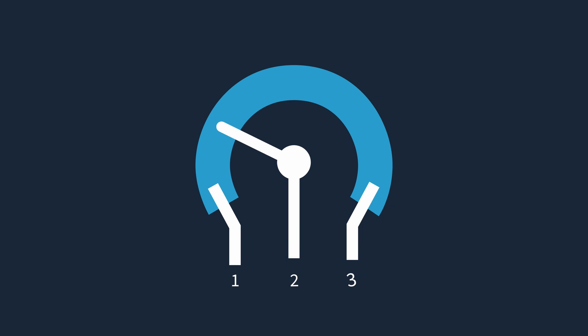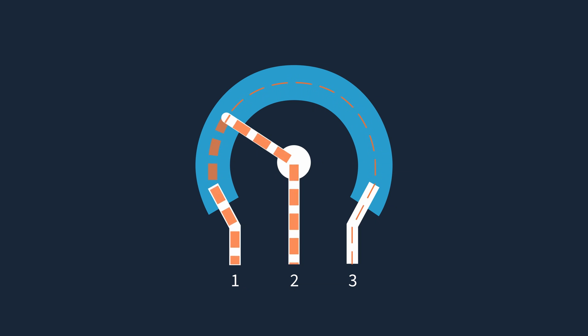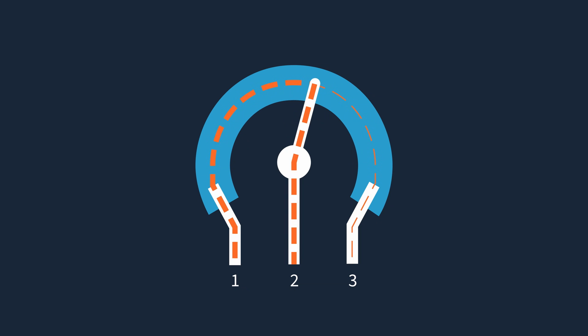Most potentiometers are three-terminal devices, which means the resistance between the two ends of the potentiometer remains the same, but the resistance between the middle terminal — called the wiper or output — and the other two terminals will change as the wiper is moved. With a properly set-up circuit, this also determines the voltage seen by the wiper.